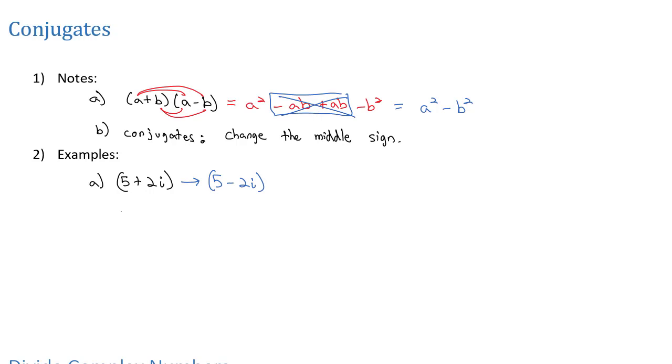Those are conjugates because when they're multiplied together, 5 plus 2i times 5 minus 2i, all I have to do is square the first term, 5 squared is 25, put a minus in the middle, and square the last term. 2i squared is 4i squared, and i squared is negative 1, which makes it now a plus 4 because of the double negatives. 25 plus 4 is 29.